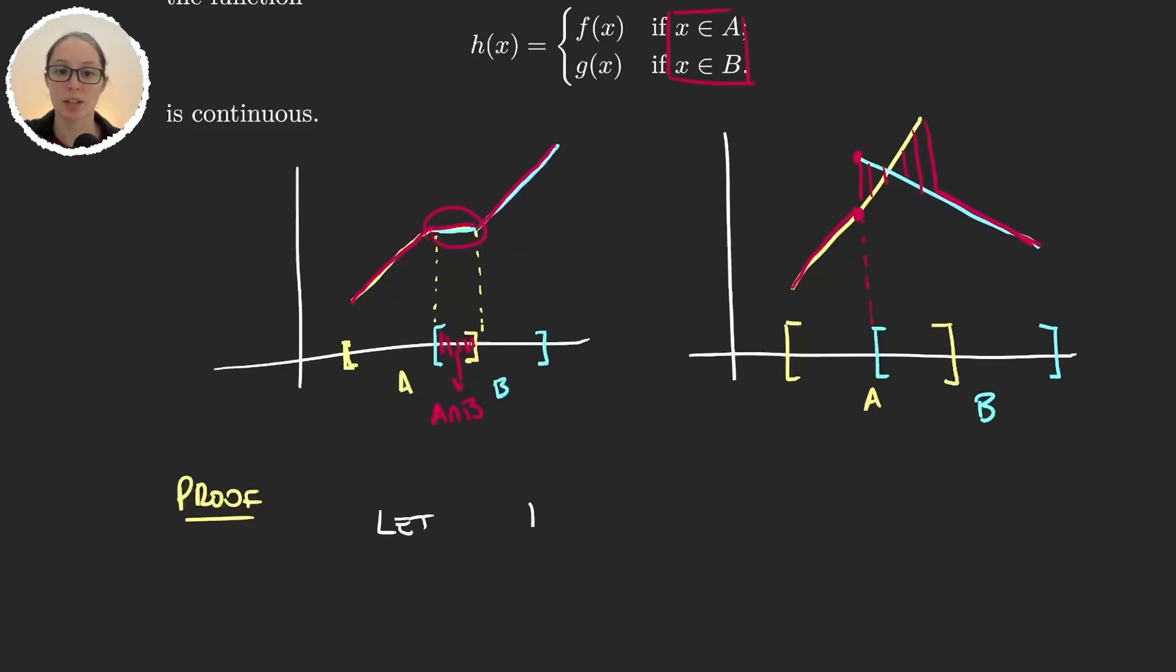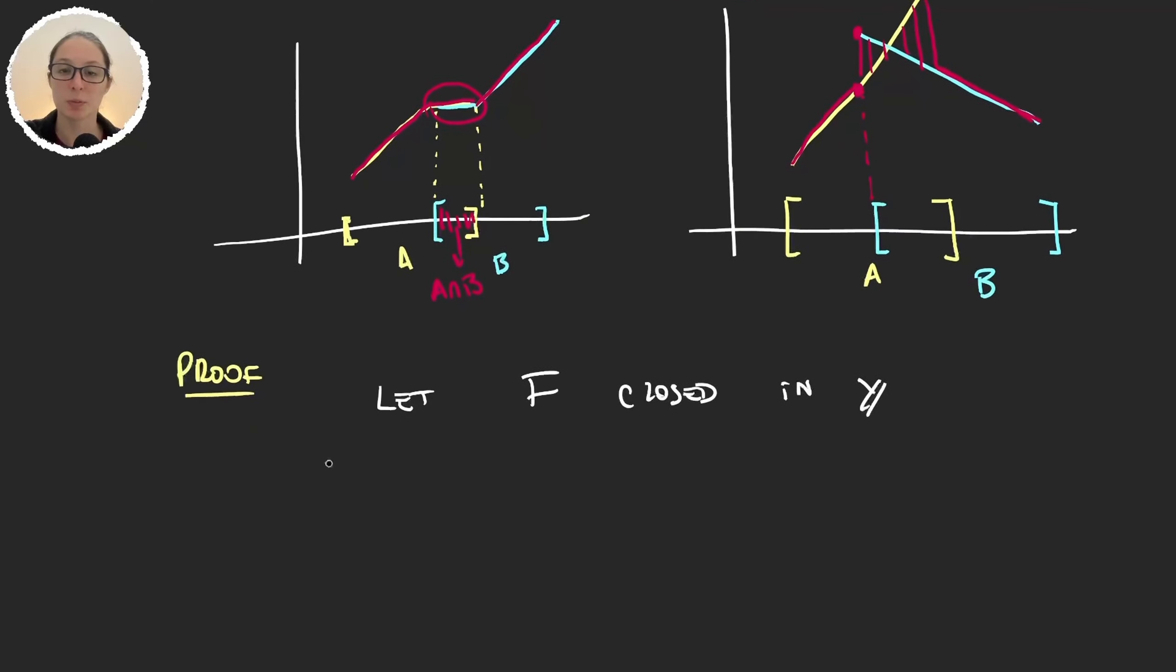So let's call f a closed set in y. And let's see what happens with the preimage of f through h.